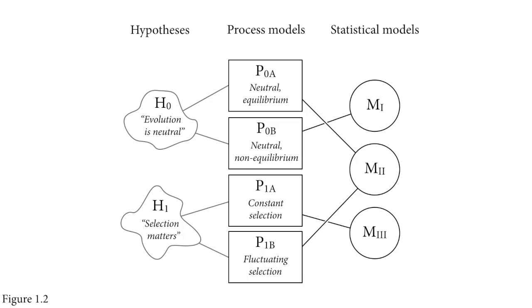But you can have other neutral models, like the neutral non-equilibrium model, where you have no selection but the population size can fluctuate. Almost all wild populations have fluctuating sizes. This gives you a different statistical expectation than the neutral equilibrium model does. You can actually test these two against one another because they imply different statistical distributions.